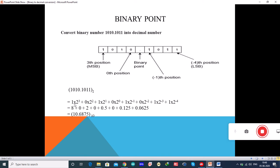You can see the same way you will write here: 1010 is 1 into 2 power 3, 0 into 2 power 2 plus 1 into 2 power 1 and 0 into 2 power 0 plus this 1 is at minus 1th position. 1 into 2 power minus 1 plus 0 into 2 power minus 2 plus 1 into 2 power minus 3 plus 1 into 2 power minus 4.